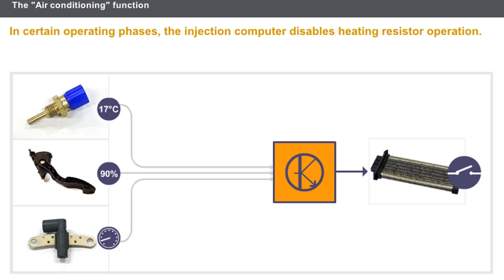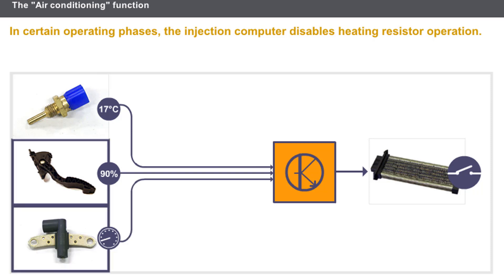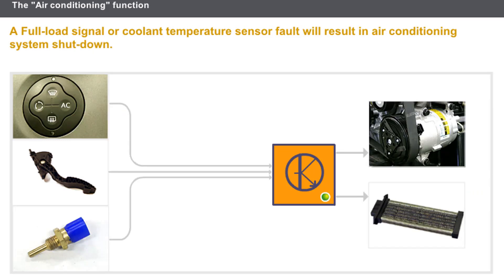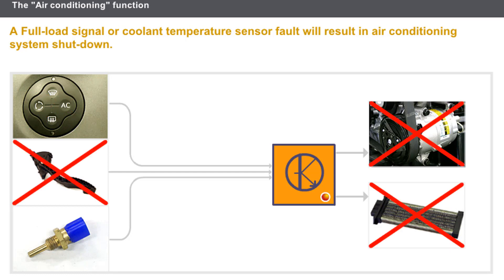Heating resistor operation is disabled after starting the engine for a timed period, depending on the engine temperature. The heating resistors are also cut if there is a high load at low engine speed. A fault on the air conditioning computer or its circuit will disable the air conditioning system. A full load signal or coolant temperature sensor fault will result in air conditioning system shutdown.